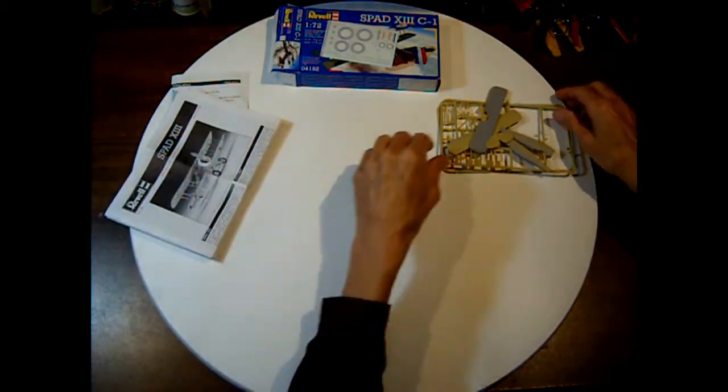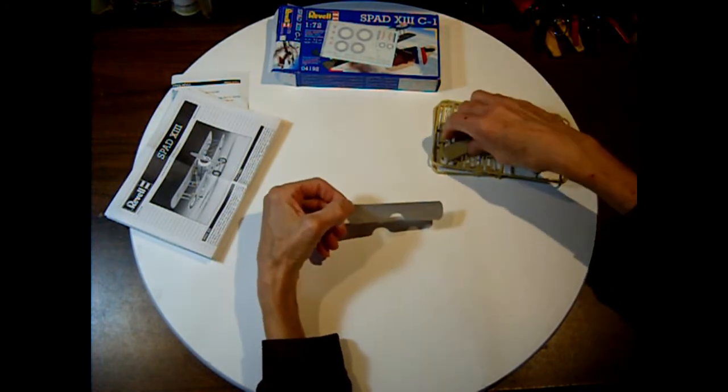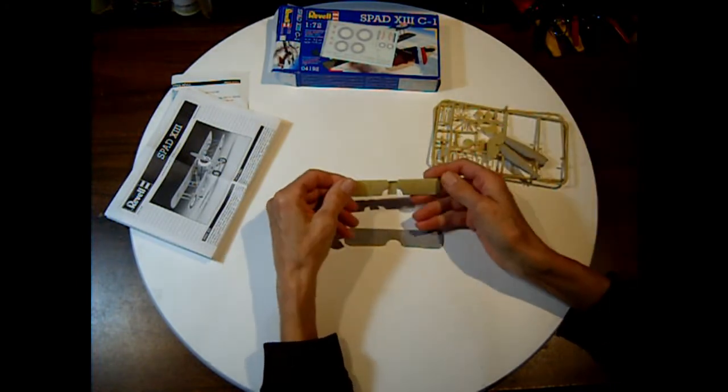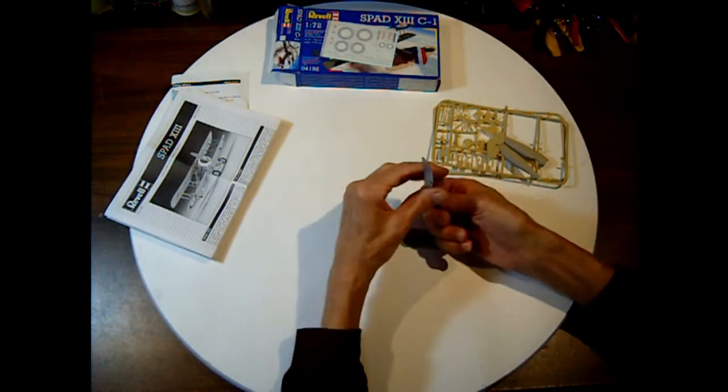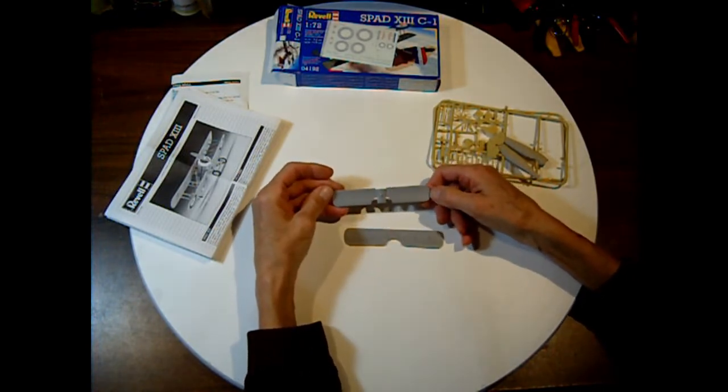So let's take a quick look at the parts here. This is the upper wing. This is the lower. You see the lower wing's got the body piece there. I painted these with flat gray primer.